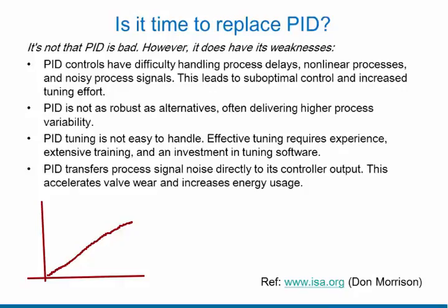We know that for a certain input, you expect to get a certain output. The other issue is time delay — there isn't a delay from the time that you create an actuated change to the time that you actually get an output change. So the linear relationship of output to input, and the time delay between output and input, both create problems for the algorithm.